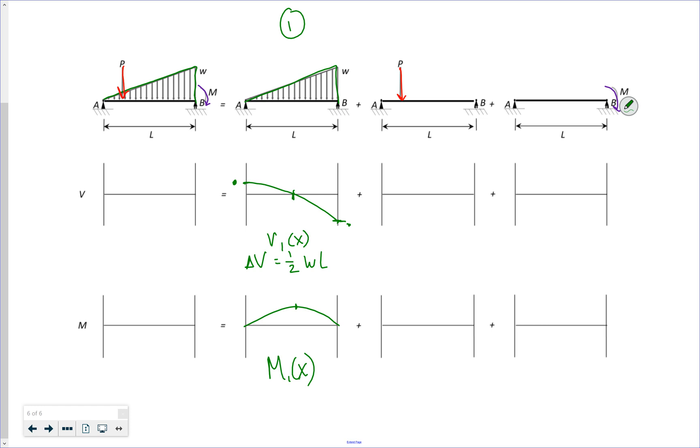This value over here would be a reaction at A and negative reaction at B. I have no moment at either support because I've got a pin and a roller—it's a simply supported beam. Those are my reactions.